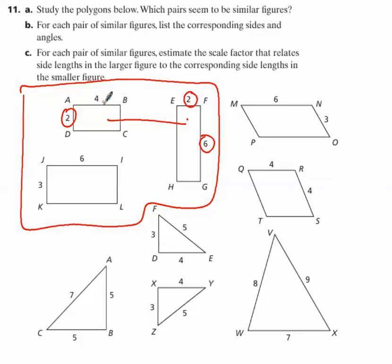Does that work? No. Because 6 times 1 is not 4. 6 times 1 is 6. So we know that rectangle ABCD and rectangle EFGH are not similar.